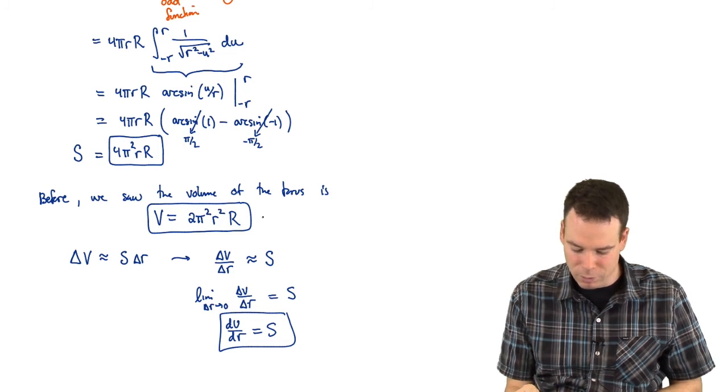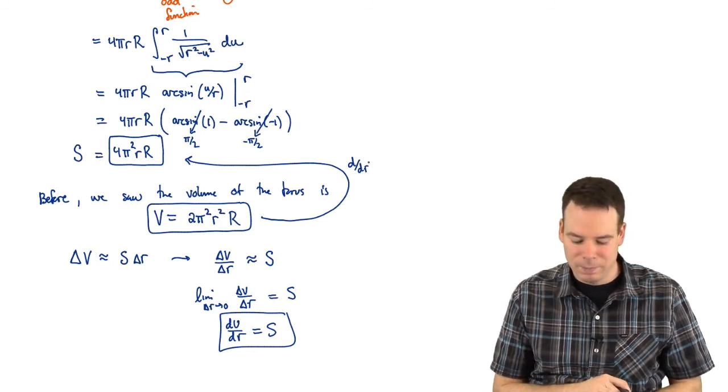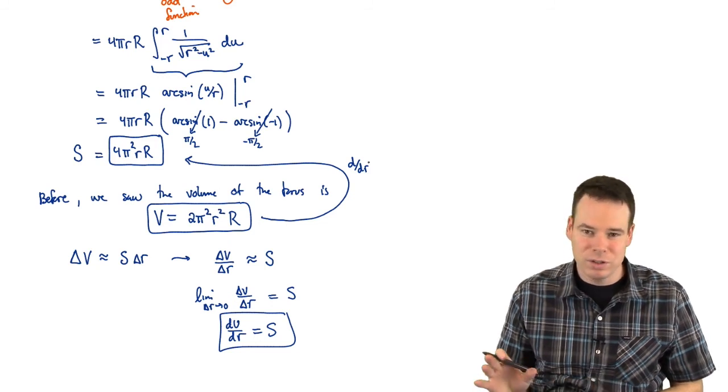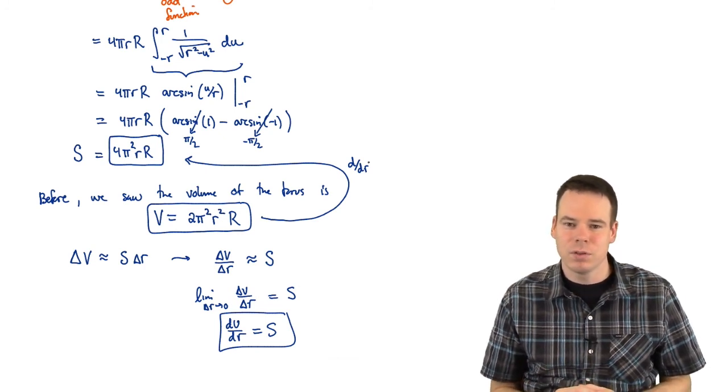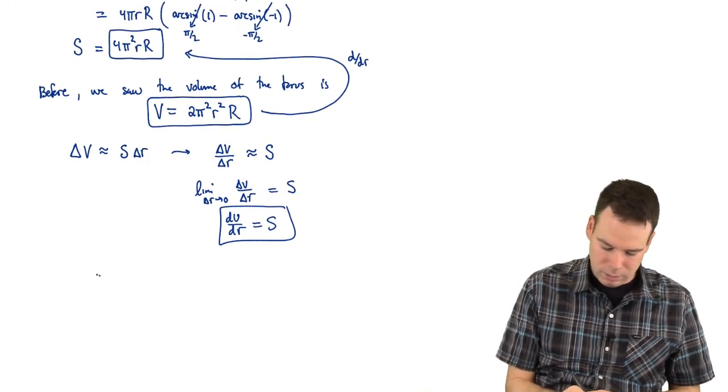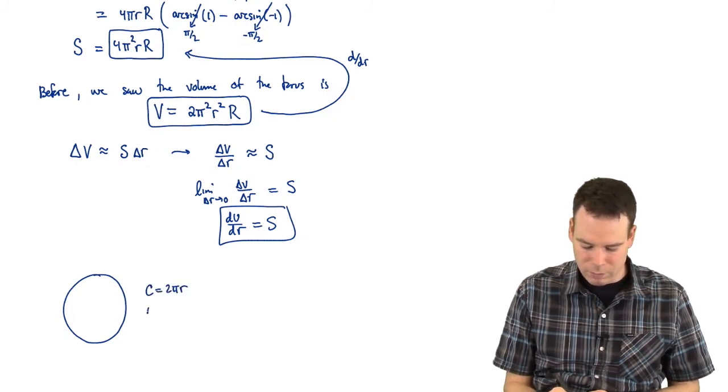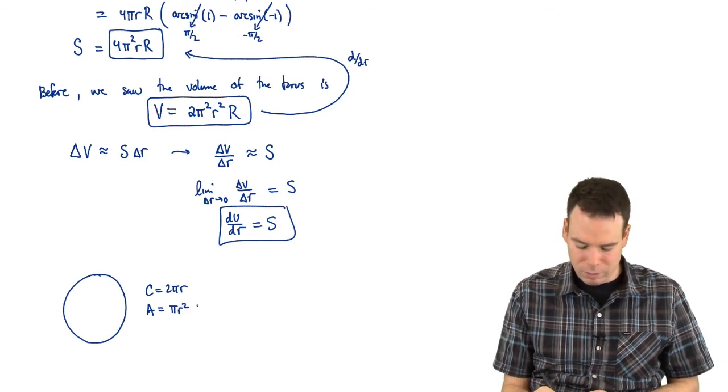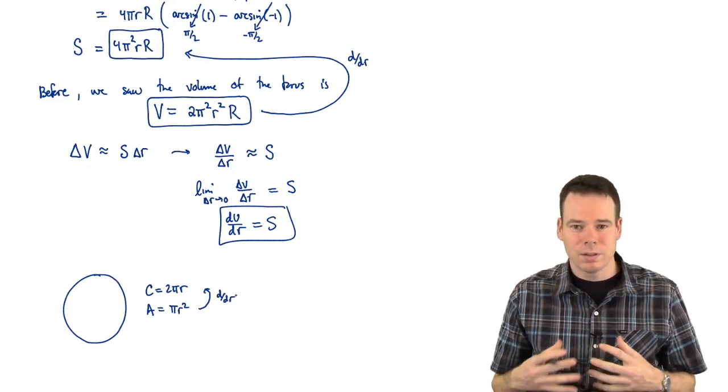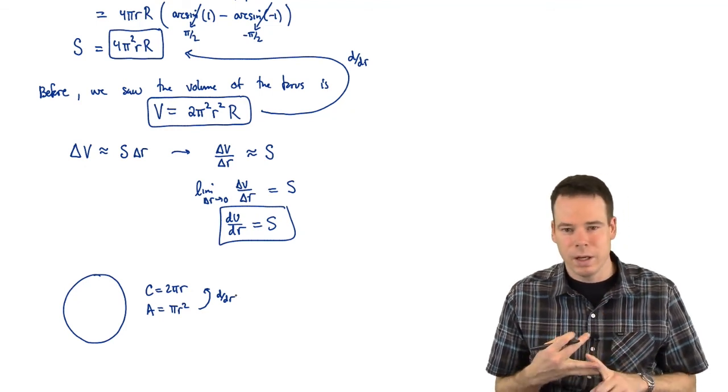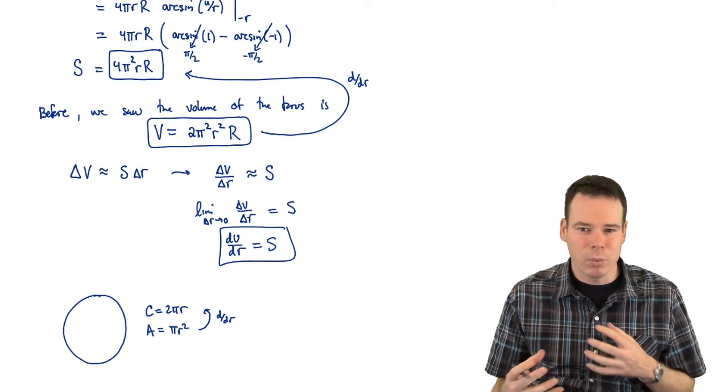So dV/dr should be surface area. It means if I take my volume formula and I differentiate it with respect to little r, I get the surface area. That's a pretty cool connection. And it's not just a connection that the torus has. You can look at other geometric objects and see that this connection holds true as well. Just as a basic example, think of the circle. What are a couple of properties we have for the circle? Well, we have its circumference, that's 2πr. And we have its area, which is πr². And what do we notice? Well, we notice there's a connection here. If I take the area and I differentiate it, I get the circumference. So there is this connection between objects and their lengths, areas, volumes.